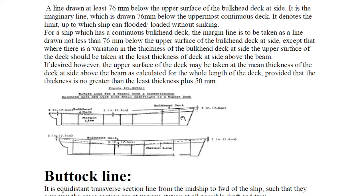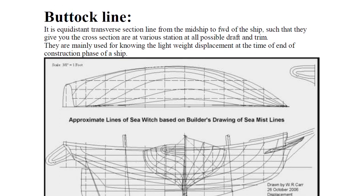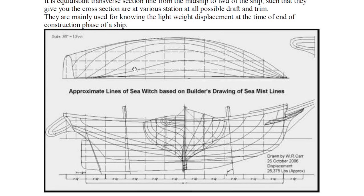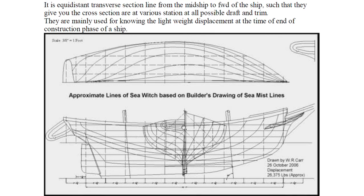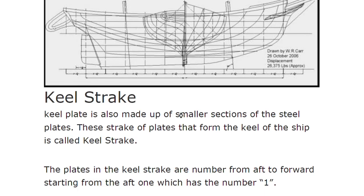Vertical lines (stations) are equidistant transverse section lines from midship to forward of the ship that give the cross-sectional area at various stations at all possible drafts and trims. They are mainly used for calculating lightweight displacement at the end of the construction phase of the ship, using Simpson's rules.